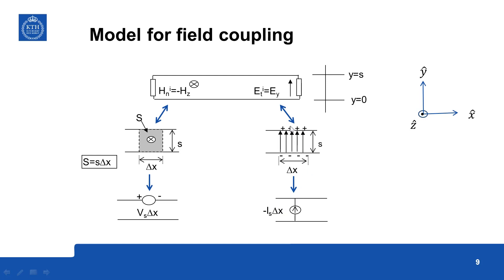Is per unit length and multiplied by delta x you will get this elemental current source, so this is the model for electric field interactions, so we will find how we can find this Is and Vs in the later view graph.